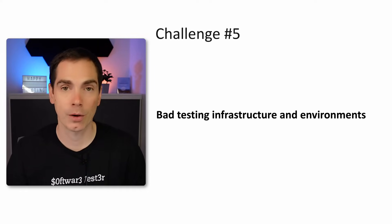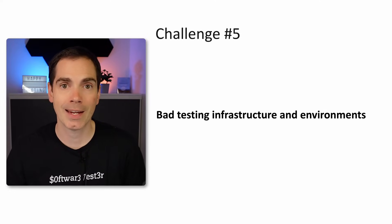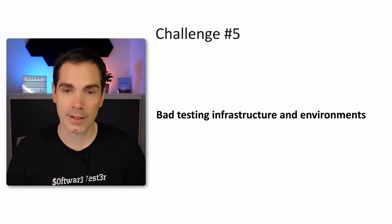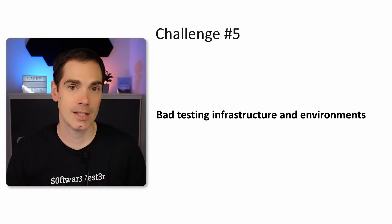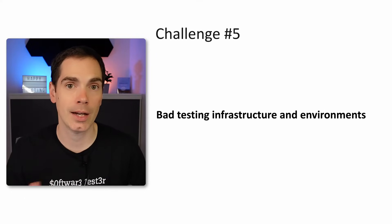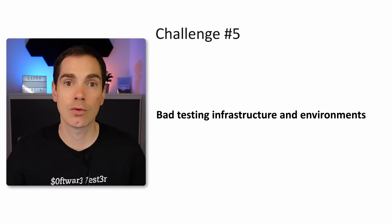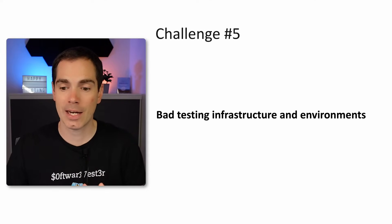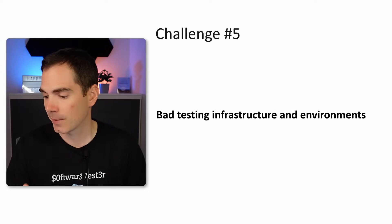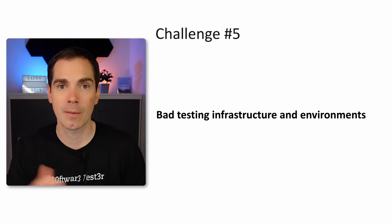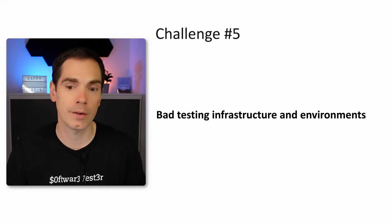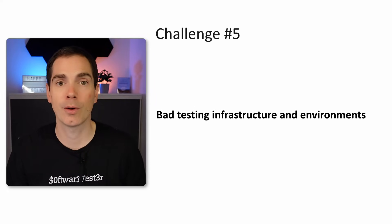Challenge number five: bad testing infrastructure and environments. If your company isn't ready for suitable test automation pipelines and environments, that's a tough challenge. Setting up testing infrastructure, getting specific test data, a pre-production environment — all of this takes time. It's also a challenge to scale it across multiple teams or the whole organization, so every developer has a sandbox system, maybe based on Docker or other technologies, plus pre-production and production environments. Ideally you'd have a dedicated team focused only on testing infrastructure.